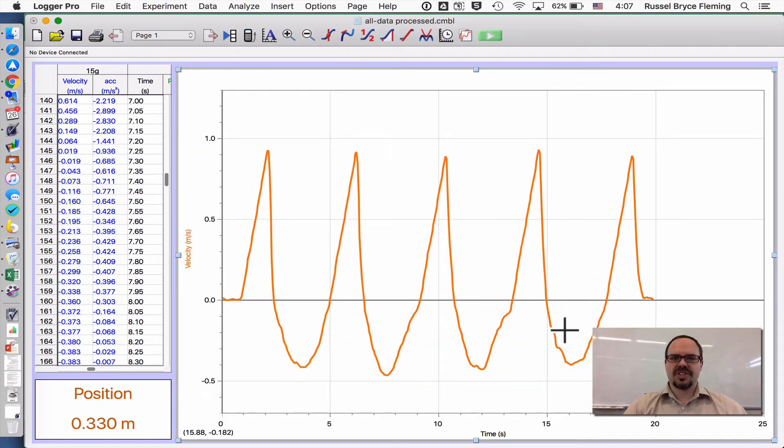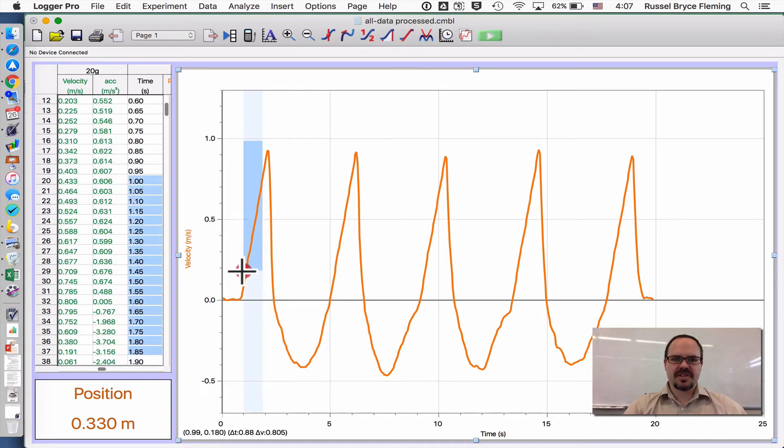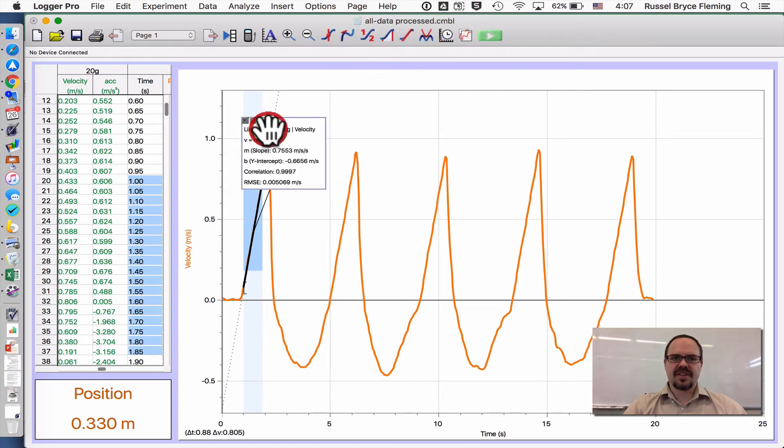Now that we only have the orange data, I'm going to select the parts that I want. And I'm going to click Linear Fit, and I'm going to get the value 0.7553.